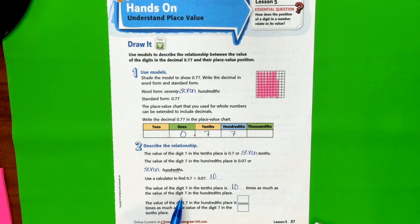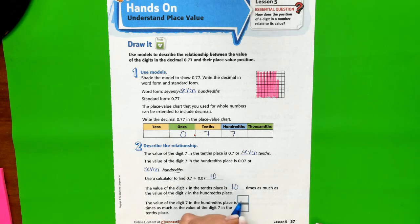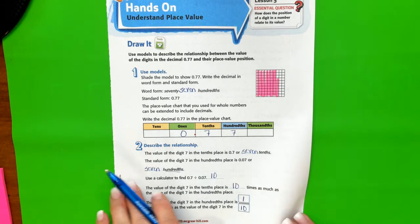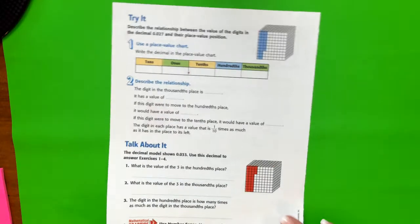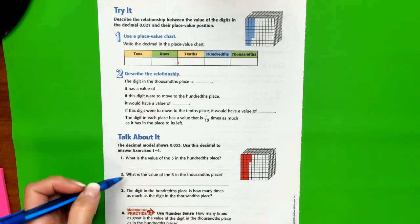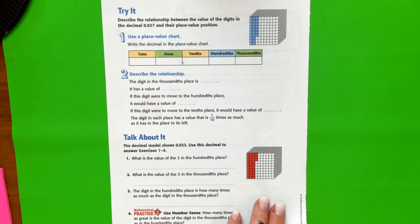The value of the digit seven in the hundredths place is one tenth as much as the value of the digit seven in the tenths place. Let's do the Try It, and I'll leave the Talk About It for you to do with your teacher.